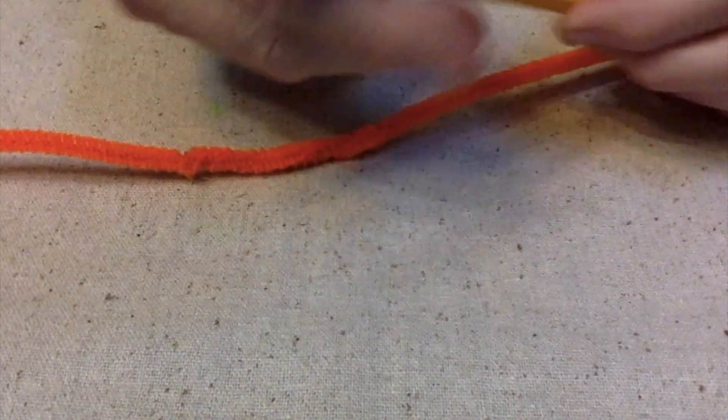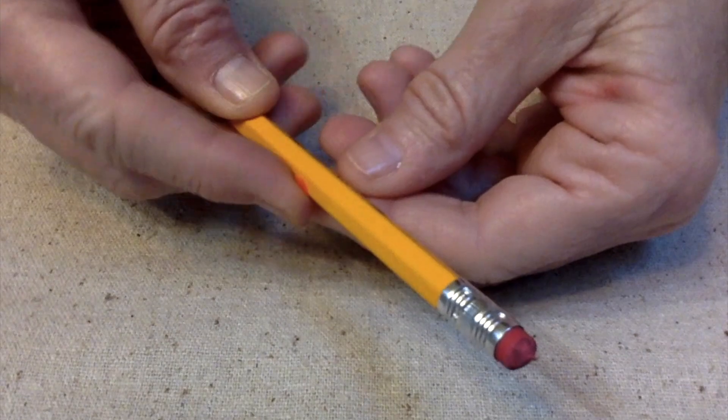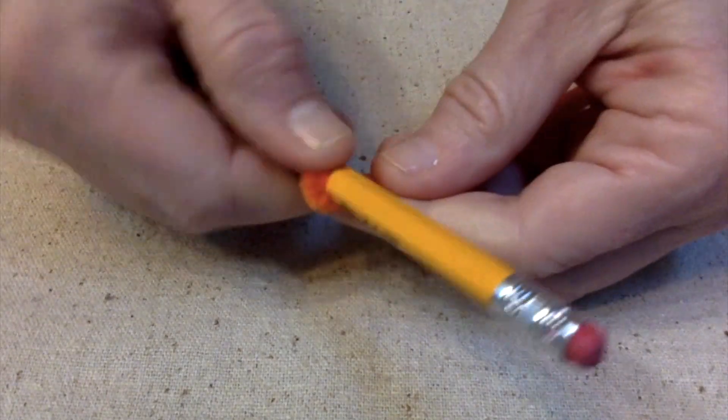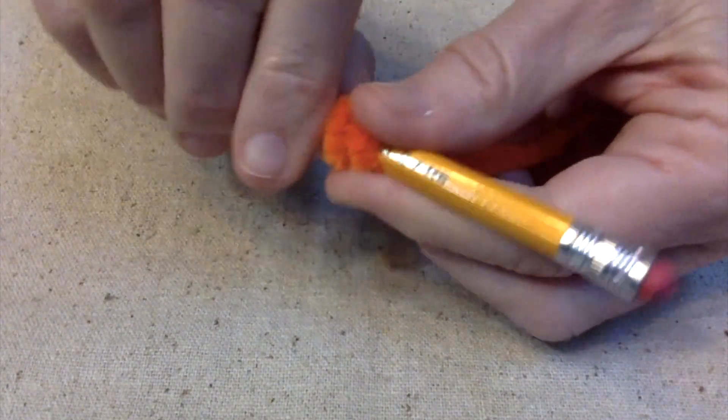I'm going to use the smaller one right now. And you just start twisting your pipe cleaner around your pencil.